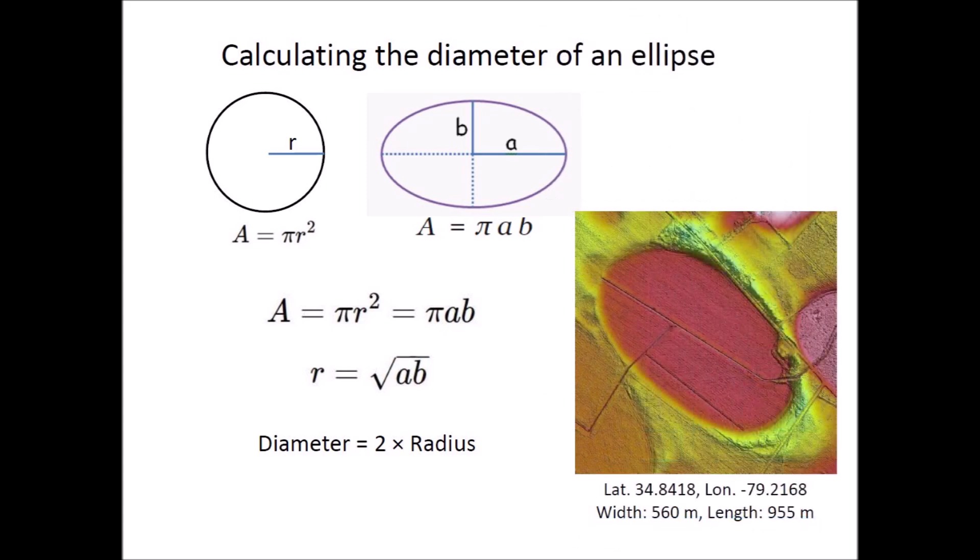The program to calculate projectile size from crater diameter assumes that the crater is circular. By equating the area of a circle to the area of an ellipse, we find that the equivalent radius of the ellipse is the square root of the product of the semi-major and semi-minor axes. The diameter of the ellipse can then be used to calculate the projectile size. This is currently the best way of adapting the yield equations for the Carolina Bays.